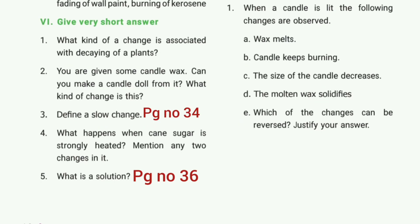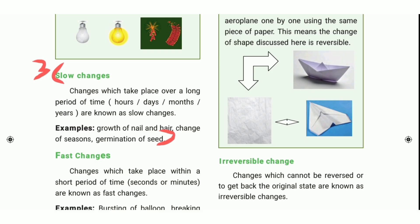Third question: define a slow change. Refer to page number 34. Changes which take place over a long period of time — hours, days, months, years — are known as slow changes. Examples: growth of nail and hair, change of seasons, germination of seed.